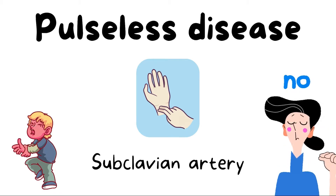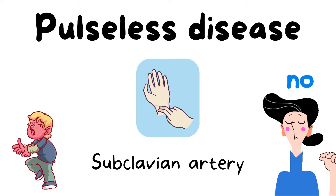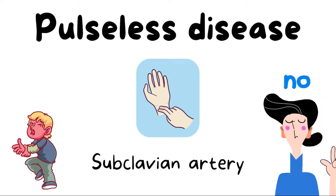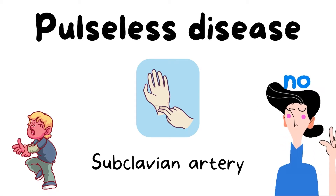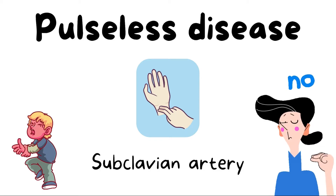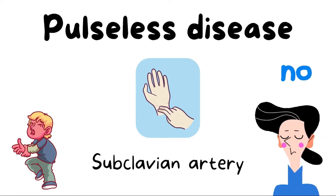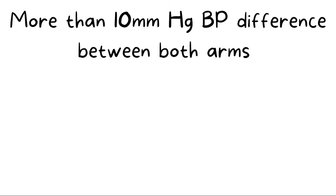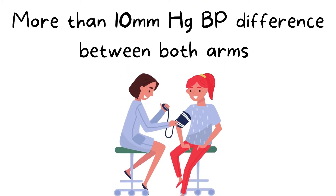Along with that, because blood supply to the upper limb is compromised, these patients can have severe claudication pain in the upper limb. A supportive feature for the diagnosis of Takayasu Arteritis is a blood pressure difference of more than 10 mmHg between both arms.